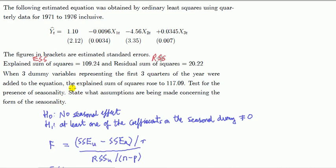Okay, so first of all, state the null and the alternative. The null is that there's no seasonal effect, i.e., the three dummy coefficients on three dummy variables are zero. The alternative is that at least one of the coefficients on the dummies is not zero.